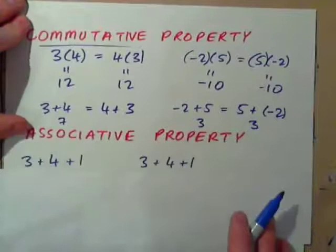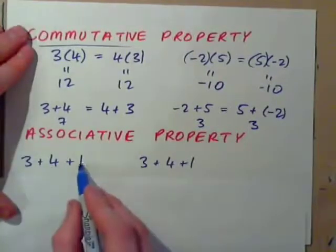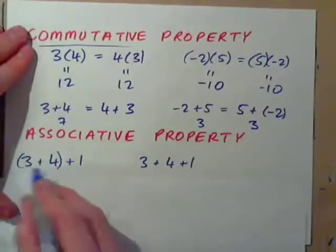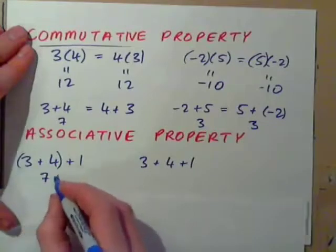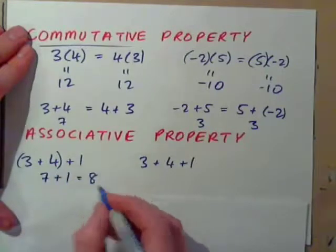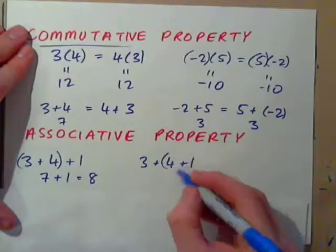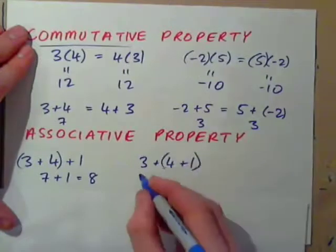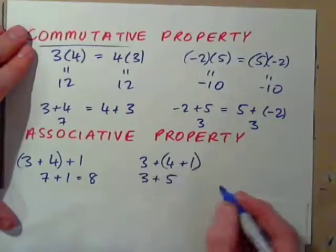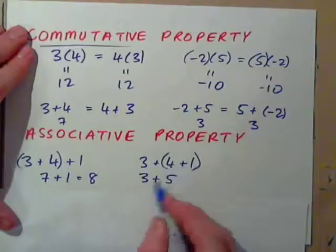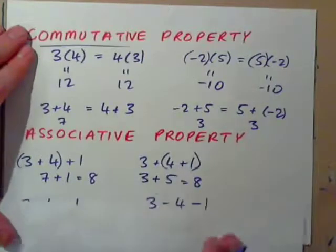The associative property. If you have 3 plus 4 plus 1. Well, if you add these first, 3 and 4 make 7. 7 plus 1, 8, right? How about these? If you add these ones first, and now have 3 plus 5. So, adding the last two first, that also makes 8. No big deal.